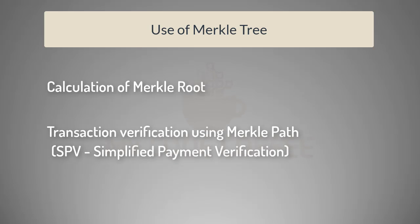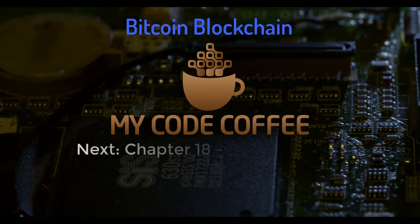This second use comes into picture in a particular type of node called an SPV node, or Simplified Payment Verification node. As you can see, Merkle tree is a very efficient data structure which is used to summarize the transactions in the form of a Merkle root, and it is also used to efficiently verify a transaction if it belongs to a particular block. We will see the practical use of Merkle tree in the chapter on Simplified Payment Verification. Hope you liked this chapter — have a good day and enjoy my Code Coffee.